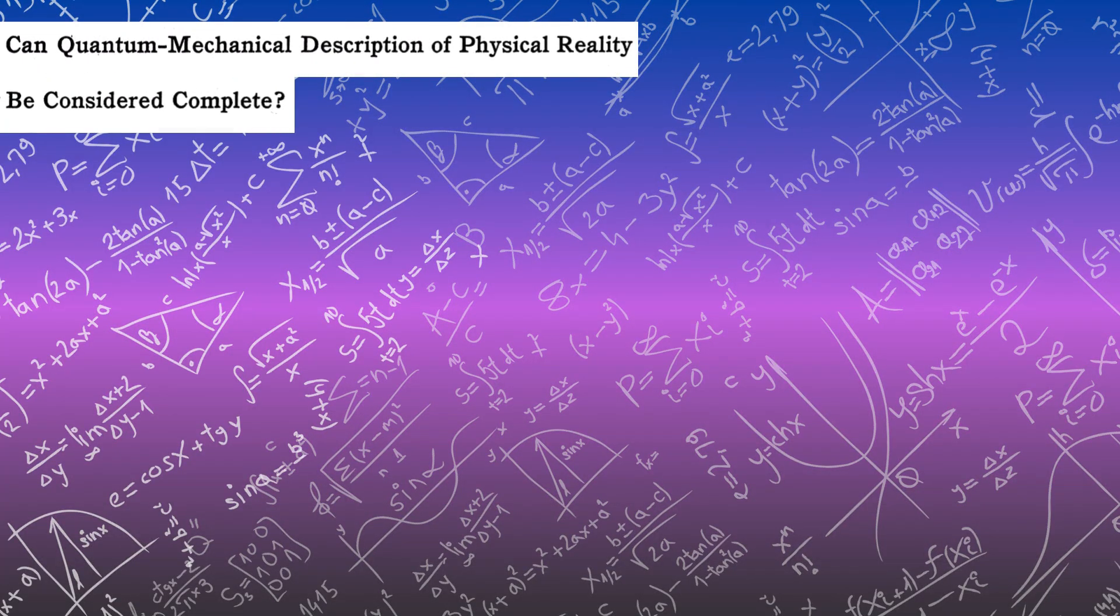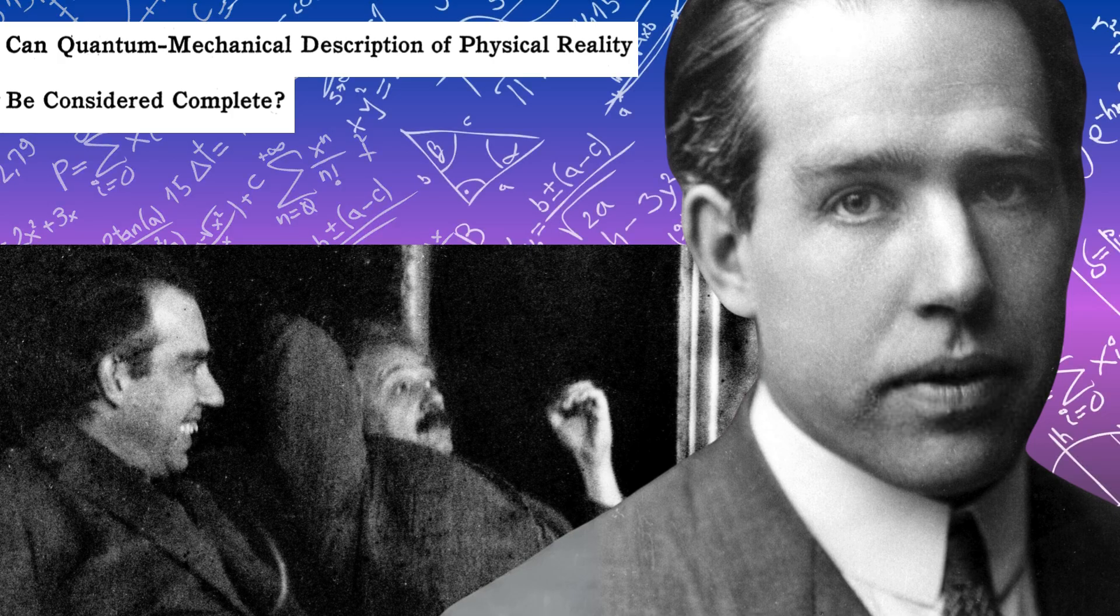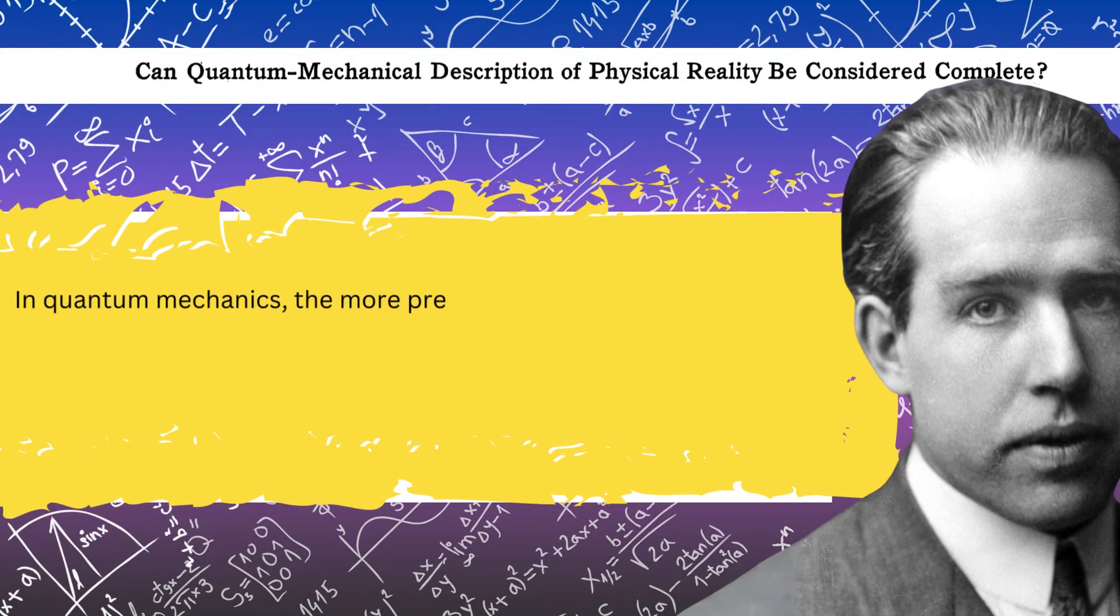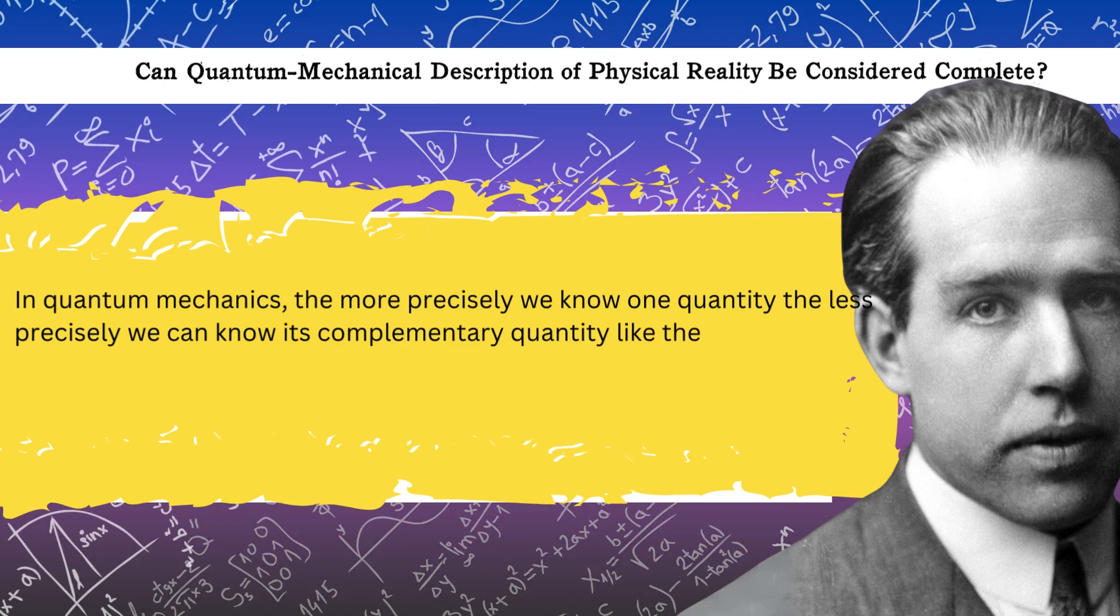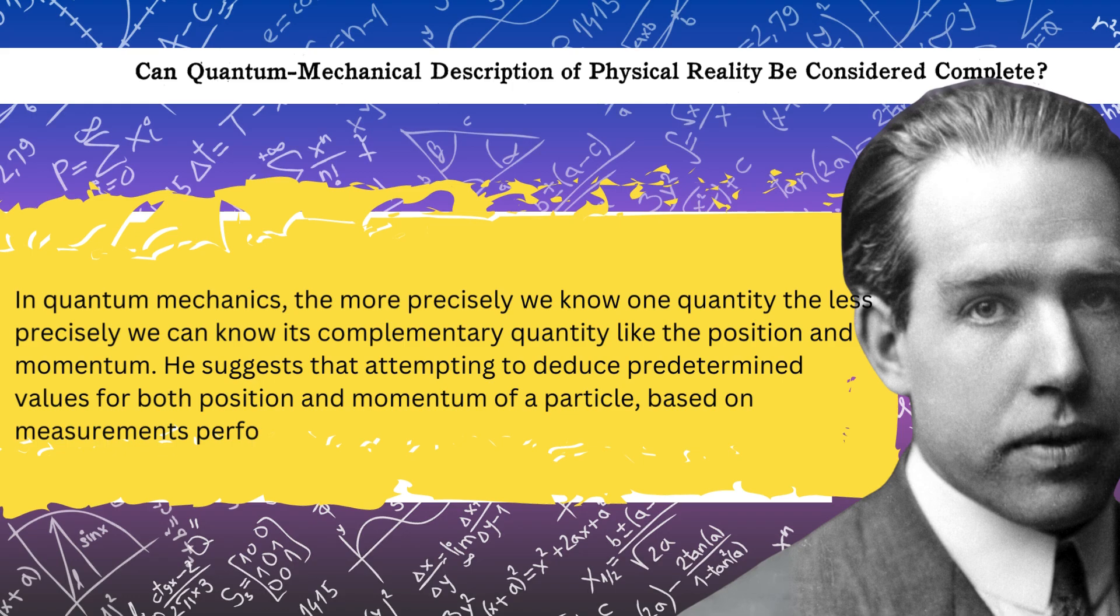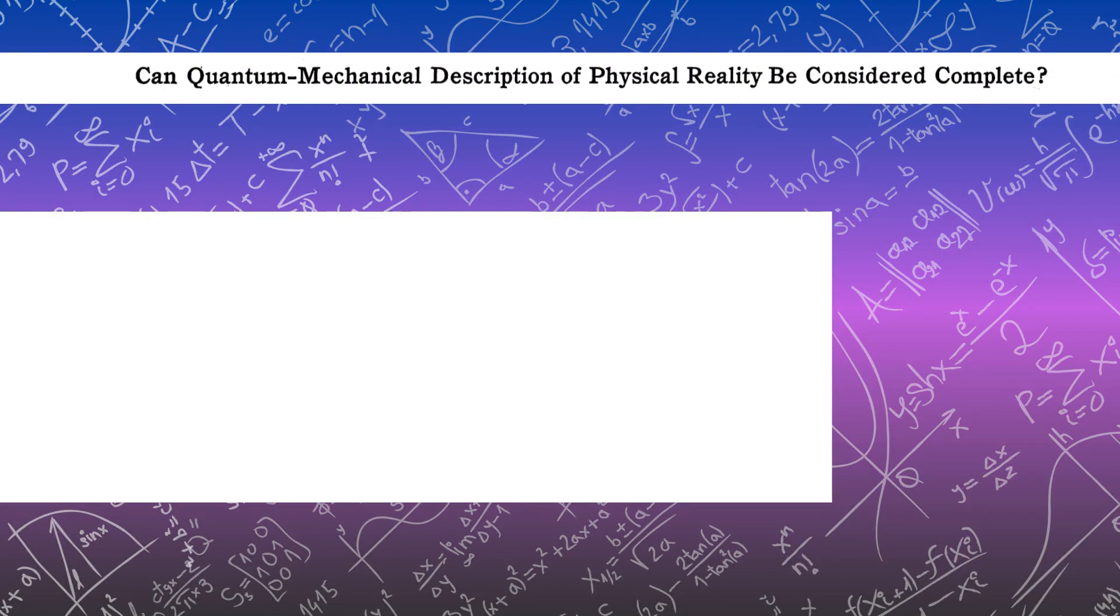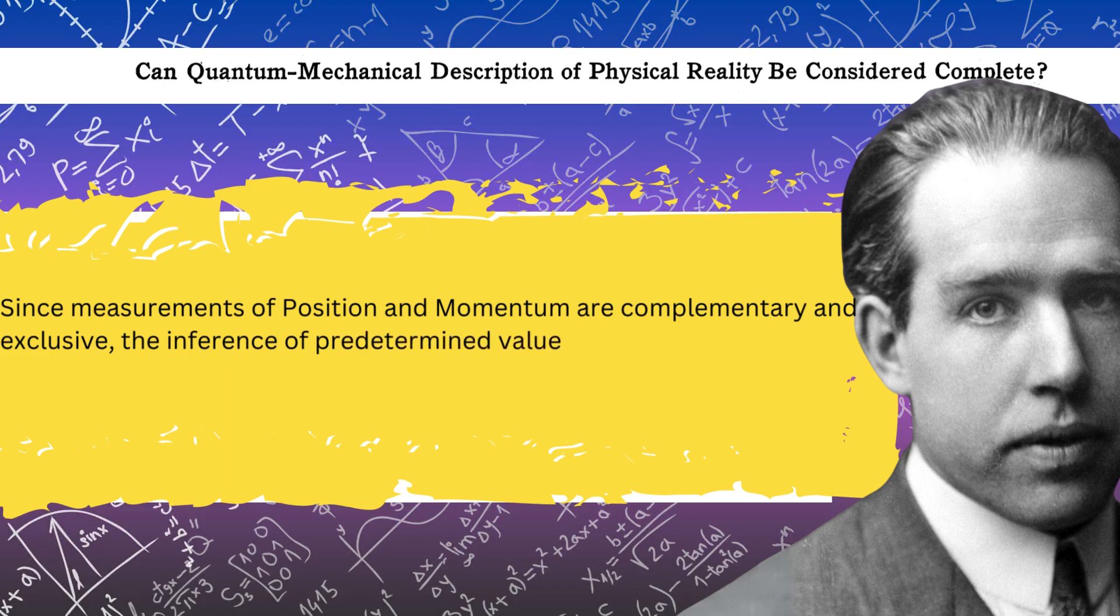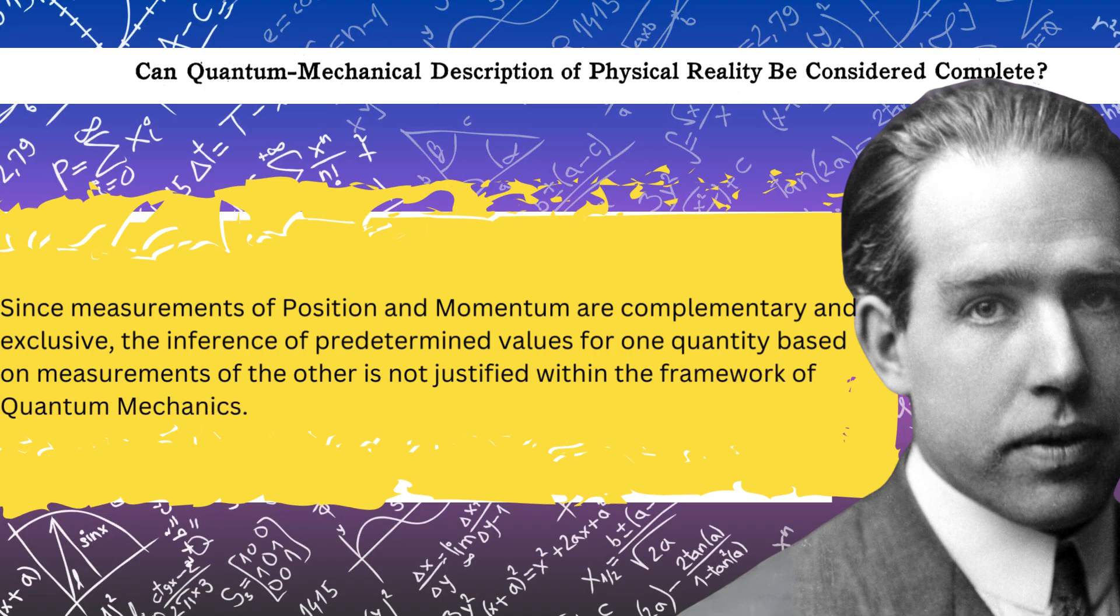Also, Einstein's paper prompted Niels Bohr to publish a paper in 1935 under the same title. He said that in quantum mechanics, the more precisely we know one quantity, the less precisely we can know its complementary quantity like the position and momentum. He suggests that attempting to deduce predetermined values for both position and momentum of a particle, based on measurements performed on another entangled particle, is not valid. Since measurements of position and momentum are complementary and exclusive, the inference of predetermined values for one quantity based on measurements of the other is not justified within the framework of quantum mechanics.